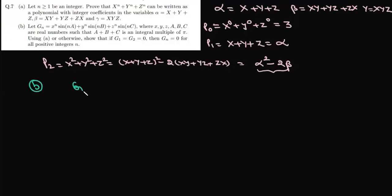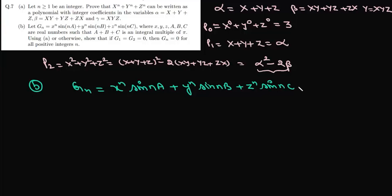Now for part (b): we are given g_n = x^n·sin(na) + y^n·sin(nb) + z^n·sin(nc), where x, y, z, a, b, c are real numbers such that a + b + c is an integral multiple of π. Using part (a) or otherwise, show that if g1 = g2 = 0 then g_n = 0 for all positive integers n.